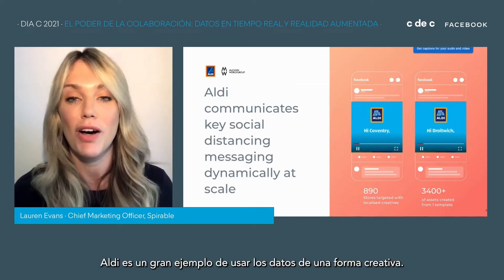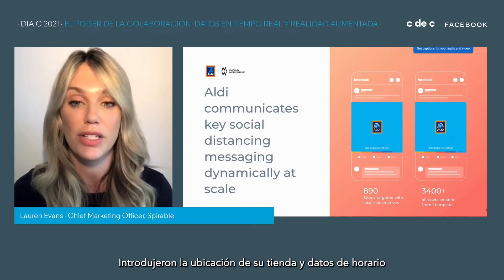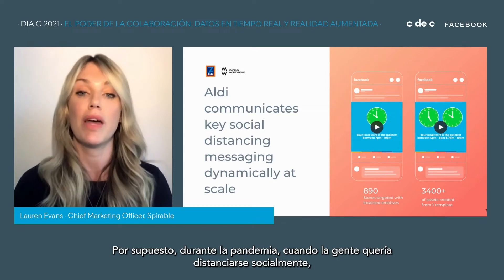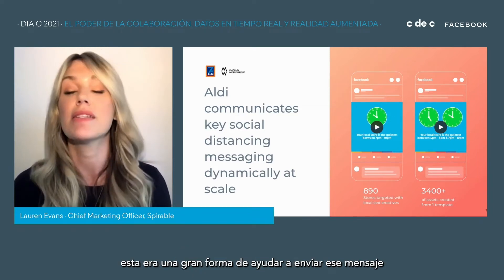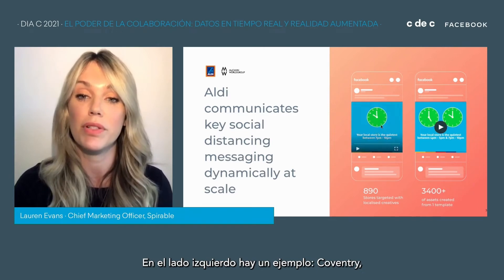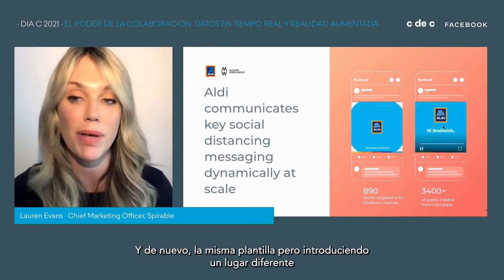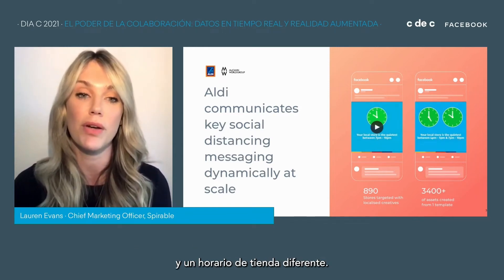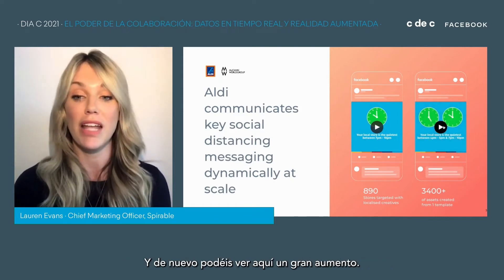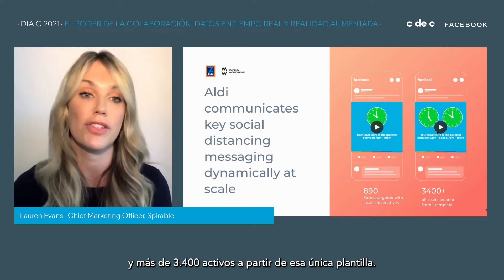Aldi is a great example of using data in a really creative way. They tapped into their store location and store time data to really educate people on the quietest times to shop. During the pandemic, when people wanted to socially distance, this was a great way to help send that message and help them shop safer. You can see the example for Coventry — it's bringing in the local store, and you can see it's quietest between 7pm and 10pm. It's the same template but tapping into a different location and different store time — 890 targeted stores and over 3,400 assets from just that one template.